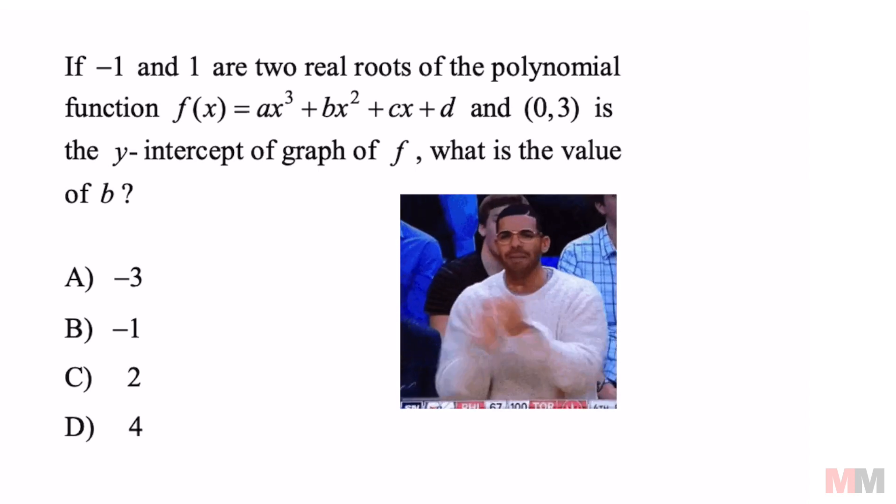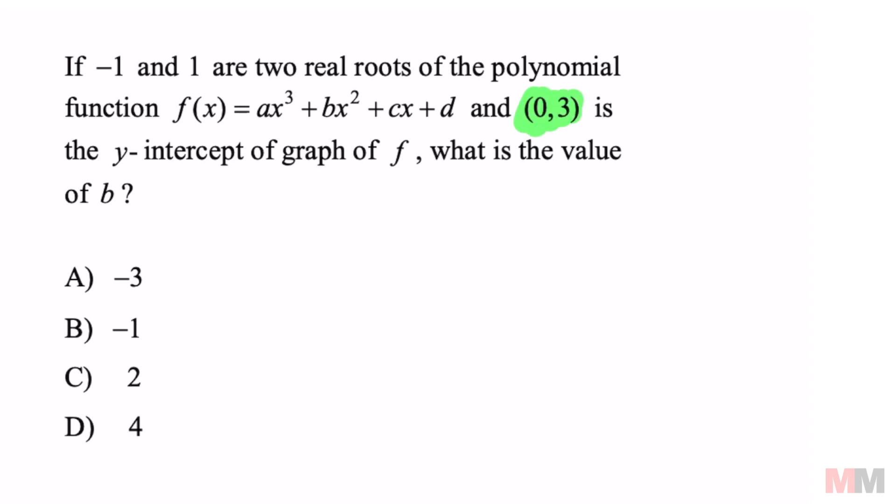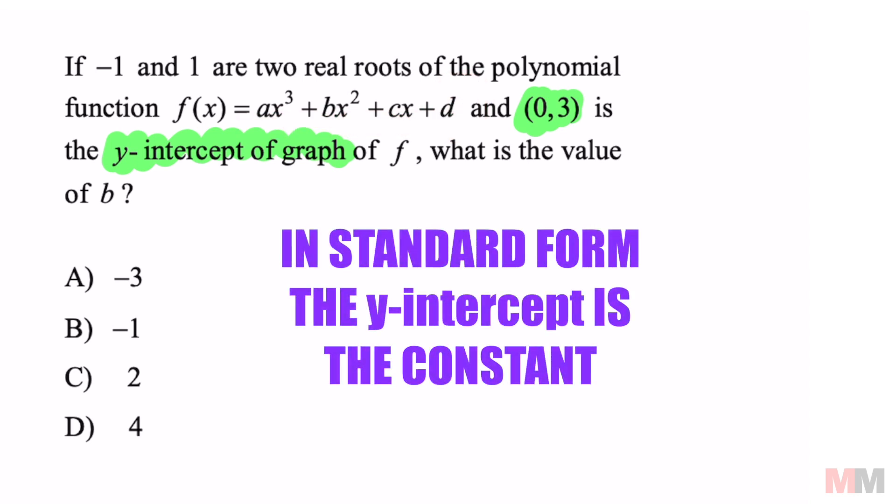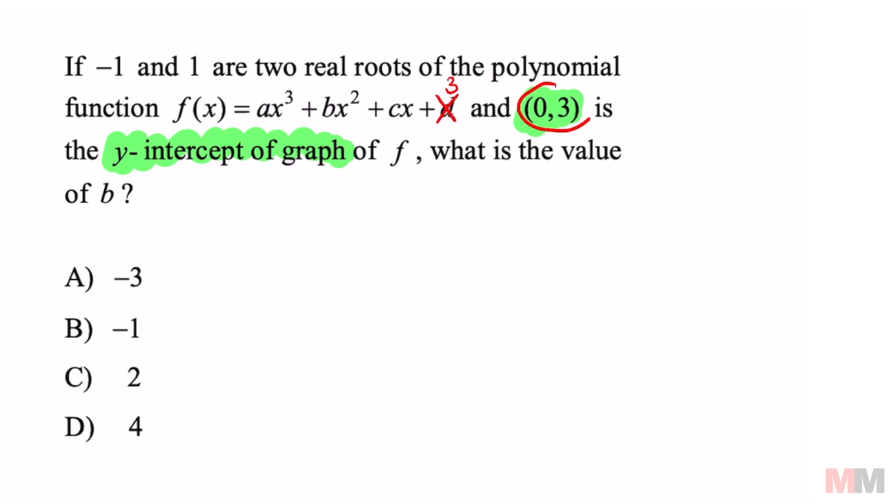First place you want to start, and we might as well take care of it, is this information right here. (0,3) is the y-intercept of your graph. So when you got a polynomial like this, this represents your constant. It doesn't have that x right next to it. Your constant is going to be your y-intercept when it's in standard form like this. So we might as well exchange that right away. Your d value is going to be 3 from this information.